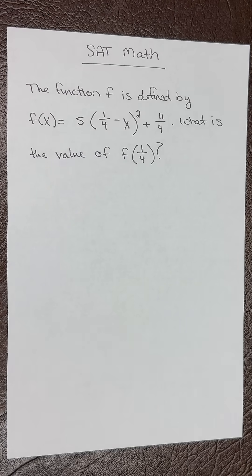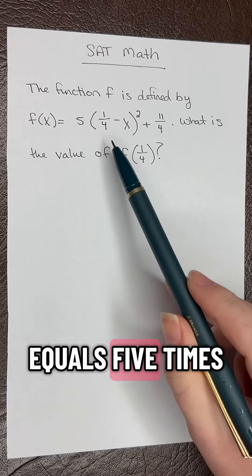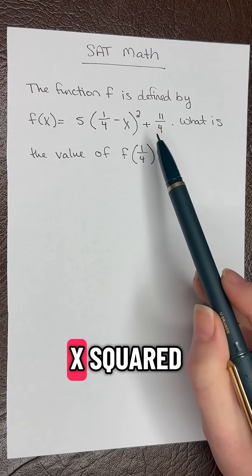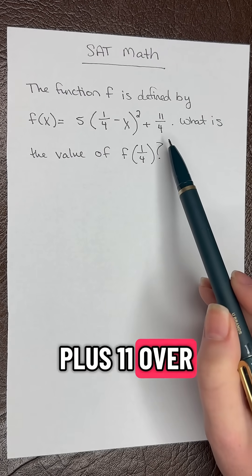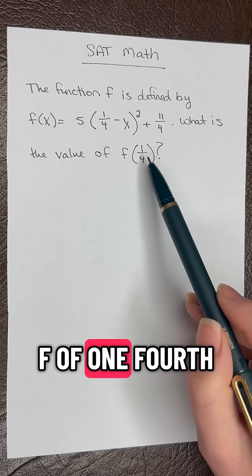SAT math question of the day. The function f is defined by f of x equals 5 times 1 fourth minus x squared plus 11 over 4. What is the value of f of 1 fourth?